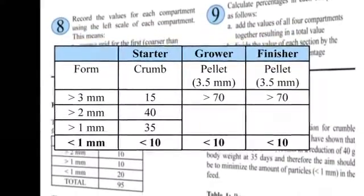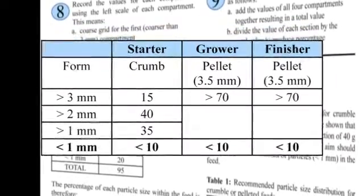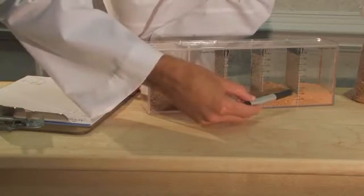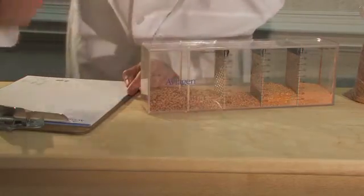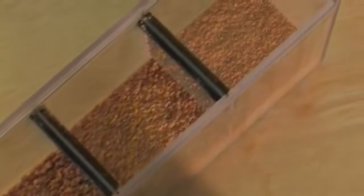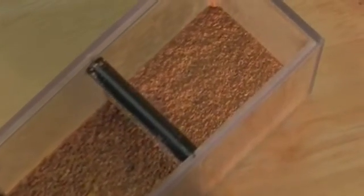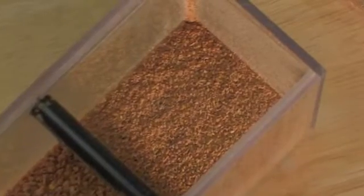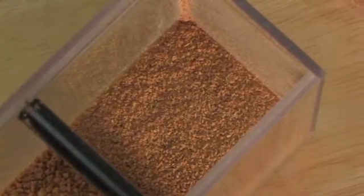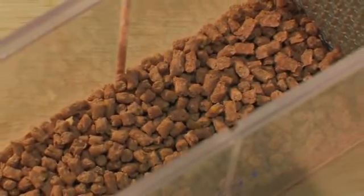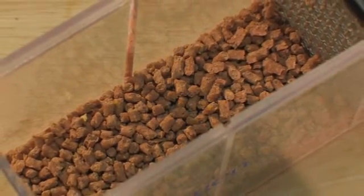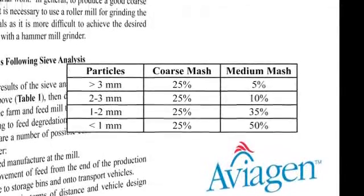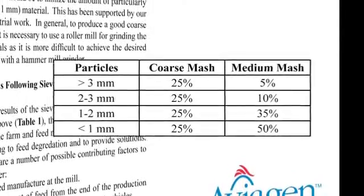Target particle size distribution for crumble and pellet is shown in these tables. The Shaker sieve can also be used to assess the particle size distribution of mash feeds. Recent Aviagen trials with mash feed have confirmed that fine particle mash should be avoided, as it has a negative impact on performance. Coarse or medium mash is much more suitable for broilers, particularly if the energy level of the feed is low. These tables show the ideal particle size distribution for coarse mash feed.